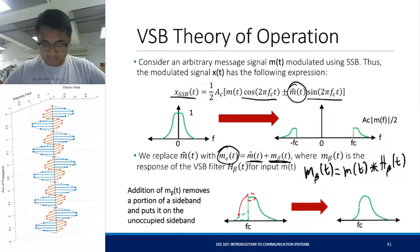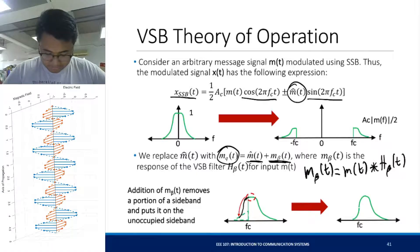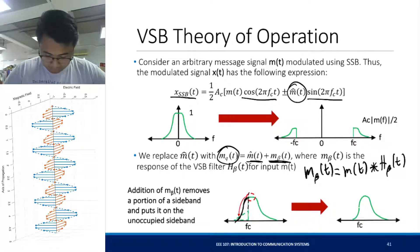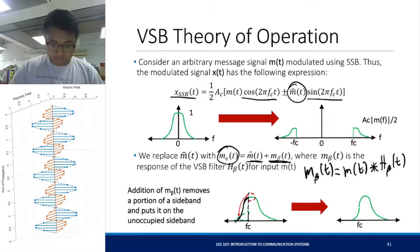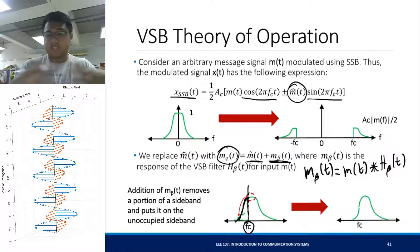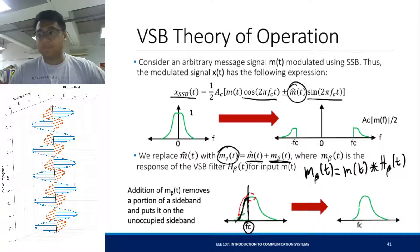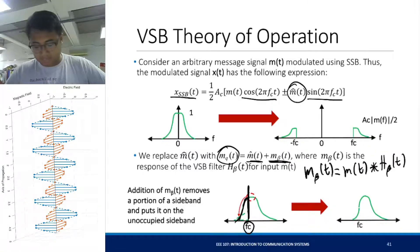Because of that, an additional part of the spectrum will be added, but it's not going to be balanced compared to your DSBSC — it won't be symmetric with FC. And it will save some form of bandwidth because of this vestigial sideband scheme.